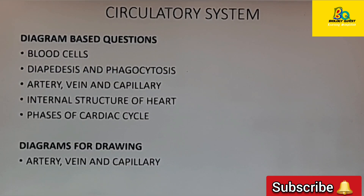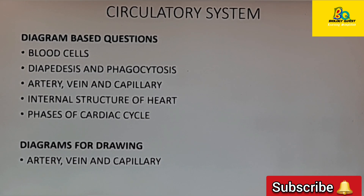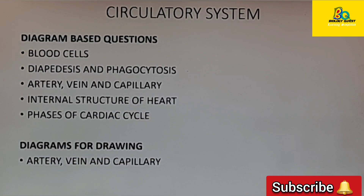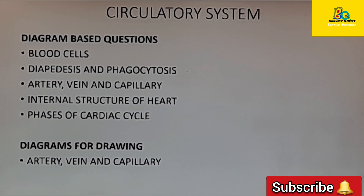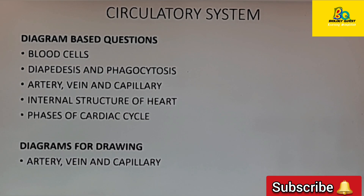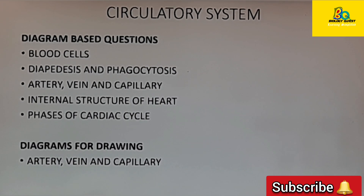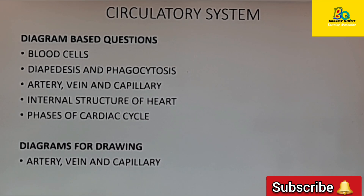Coming to the first chapter, circulatory system — the diagrams you can expect as diagram-based questions are the different types of blood cells, the diagram on diabetes and phagocytosis, structure of artery, vein and capillary, internal structure of the heart, and the phases of cardiac cycle — that is the systole and the diastole.